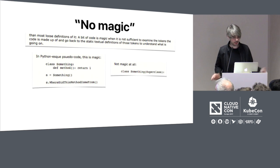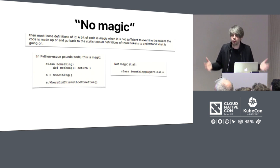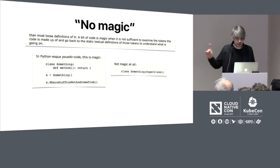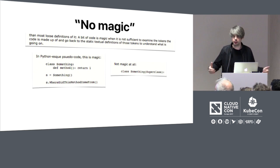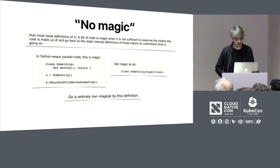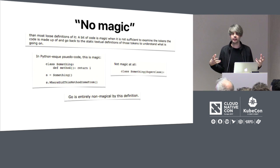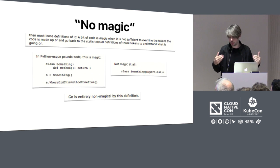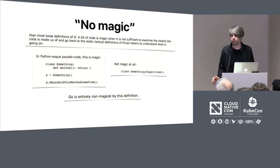Similarly, a piece of code is magical when it's not sufficient to examine the tokens the code is composed of and go back to the static textual definitions to understand what's going on. If you look at a piece of code and read all the things, that should be enough to figure out what that code is doing — if that's not true, your code is magical. In Python-esque pseudocode, if you call a method and wonder 'where did this method come from?' — in Python and Ruby you can do this, it's called monkey patching. Go is entirely non-magical by this definition. When you see Go code, you know what it's doing, and you don't have to worry about things other programmers might have done to subvert your understanding. I love this.